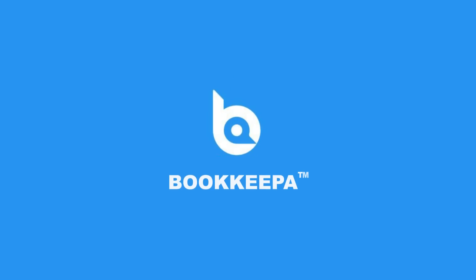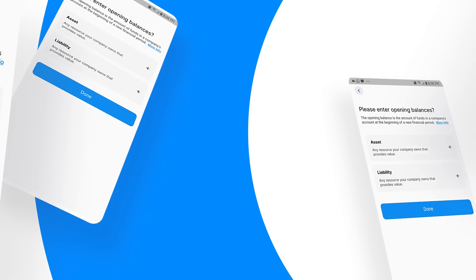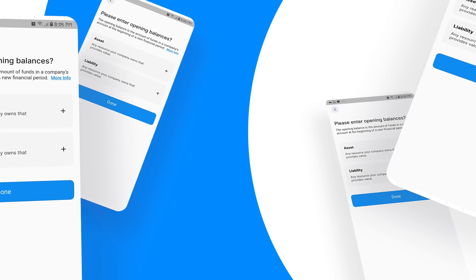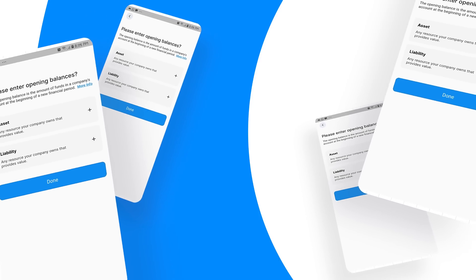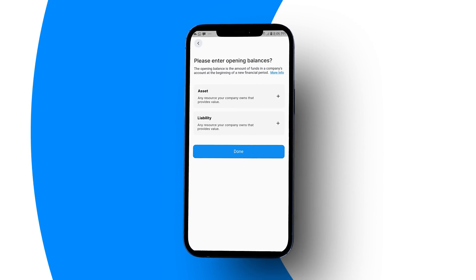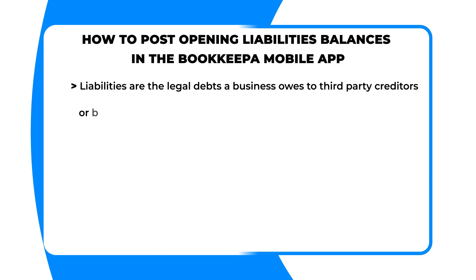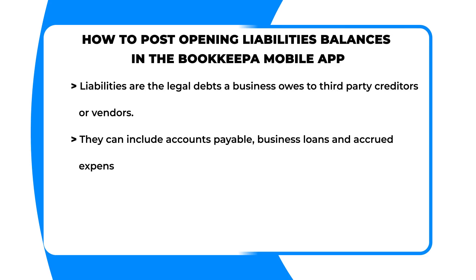This next video is a continuation of how to record opening balances while setting up your existing business in the Bookkeeper app, with a special focus on how to post opening liability balances. Liabilities are the legal debts a business owes to third-party creditors or vendors. They can include accounts payable, business loans, and accrued expenses.